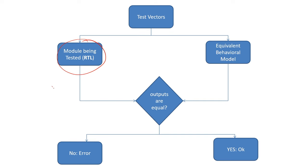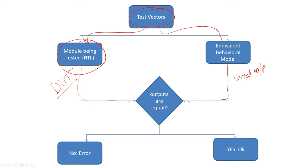Once you implement your design, you have what is called the Design Under Test (DUT). This could be a multiplexer, an adder, or anything. Now, using some method you identify the test vectors — the inputs on which you have to test it. You give these inputs to the DUT, it will run, it will give you the output, and you know that if you give this test vector, what is the correct output.